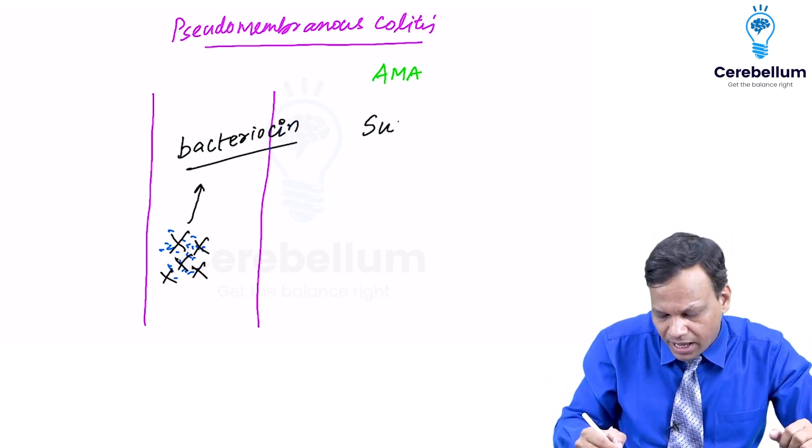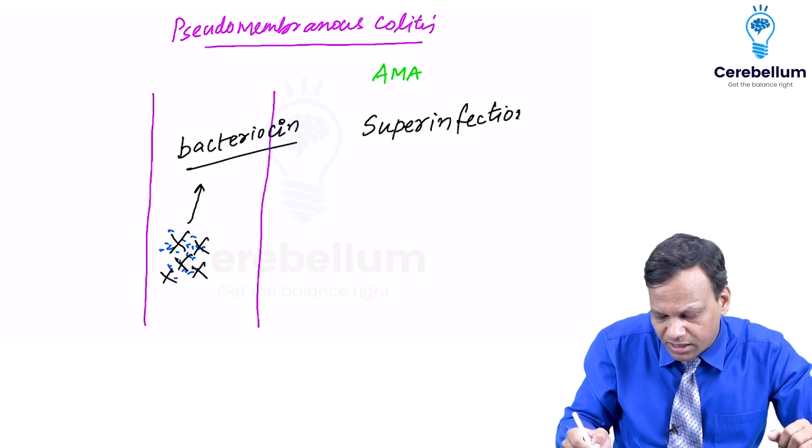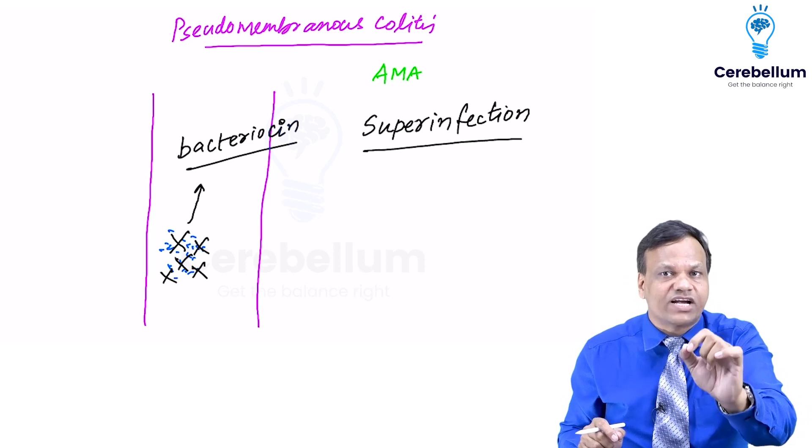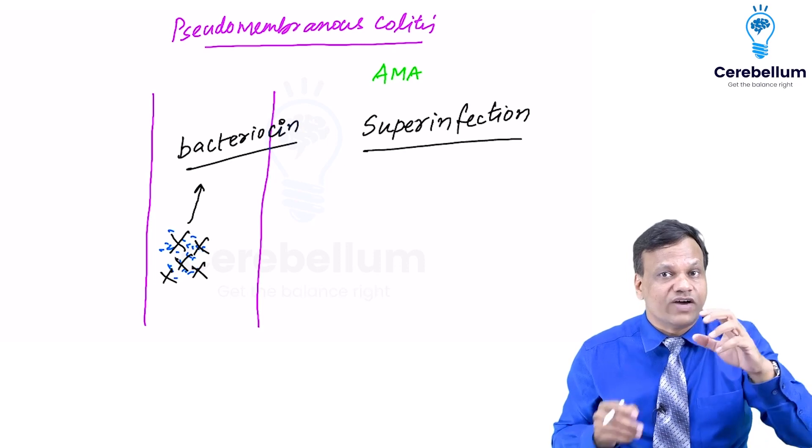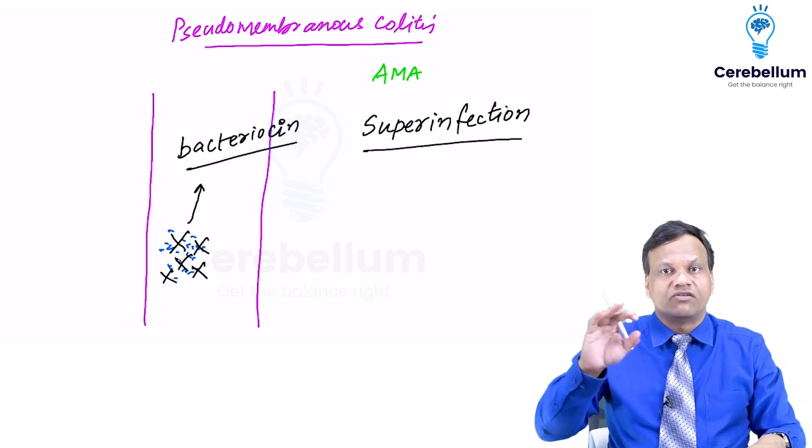So that infection is known as super infection. Remember what is super infection? Normally antibiotics are used to treat infection or prevent infection. But here the antibiotic is causing infection. So when the antibiotic is the cause of infection that is known as super infection.